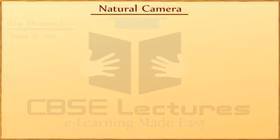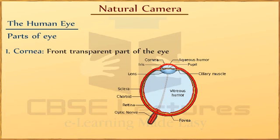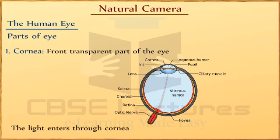The Human Eye — Parts of the Eye. First, Cornea. It is the front transparent part of the eye. It is bulging outward. The outer surface of the cornea is convex. Light enters through the cornea.